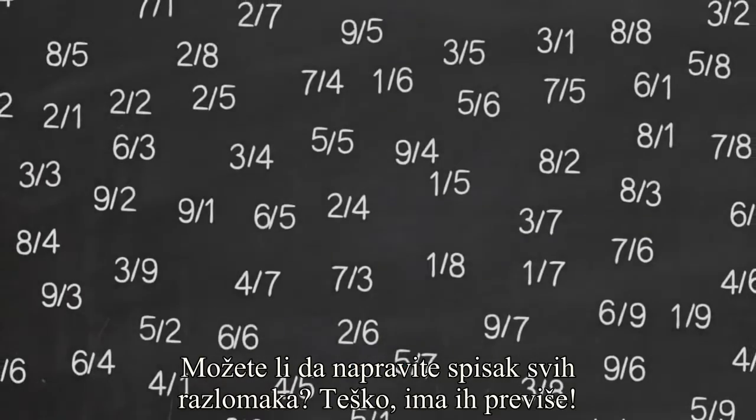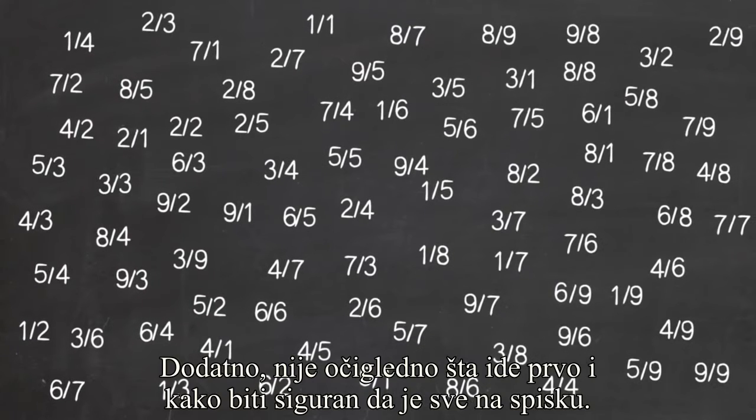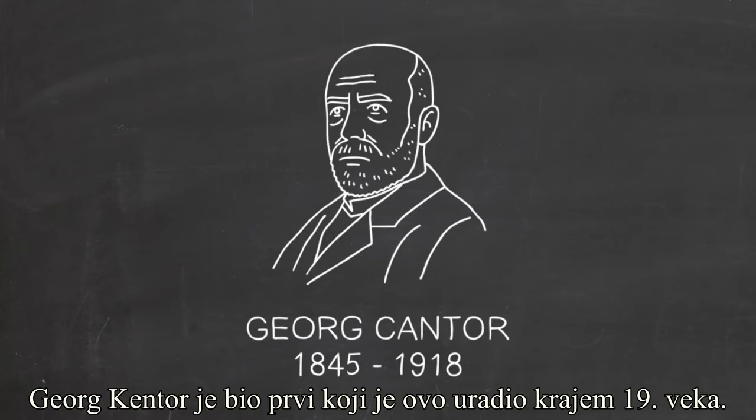Can you make a list of all the fractions? This might be hard. There are a lot of fractions, and it's not obvious what to put first, or how to be sure all of them are on the list. Nevertheless, there is a very clever way that we can make a list of all the fractions. This was first done by Georg Cantor in the late 1800s.